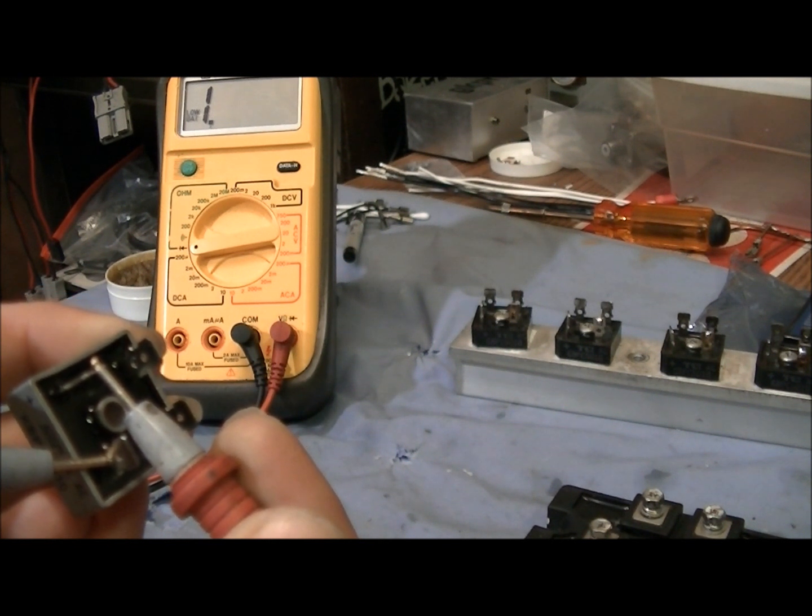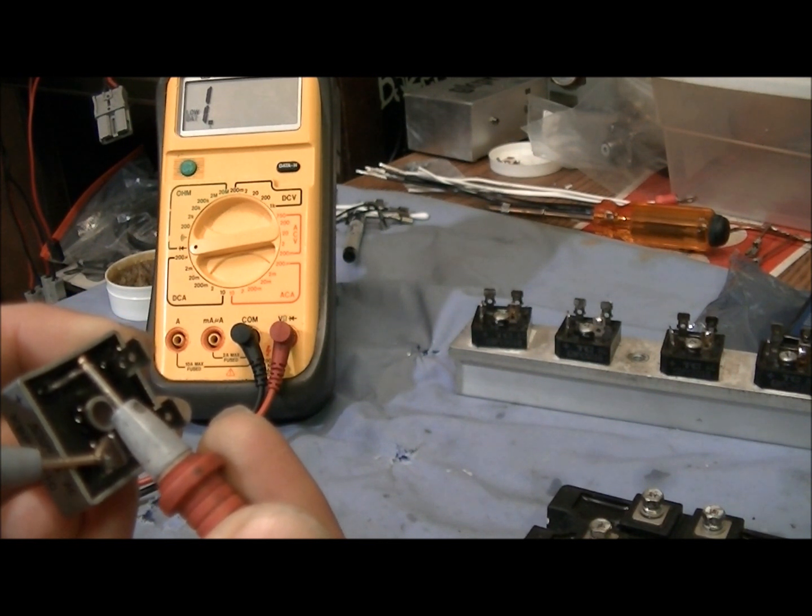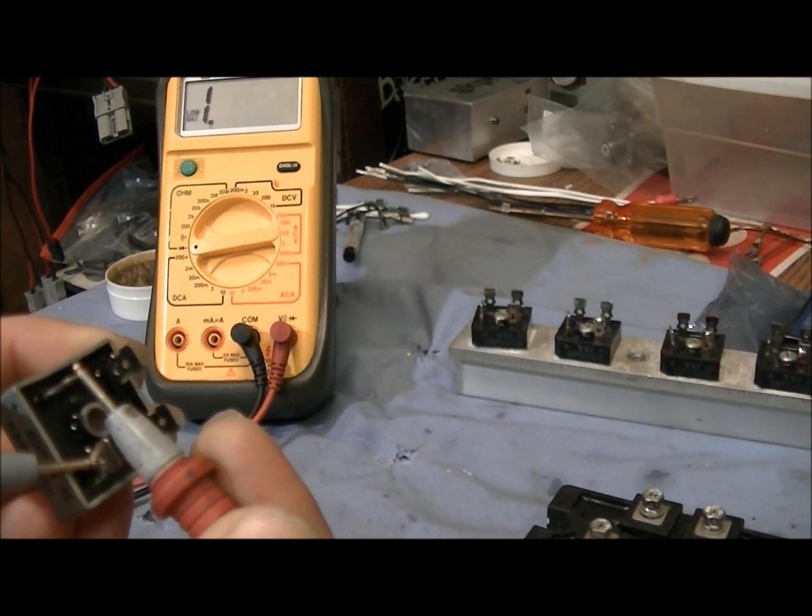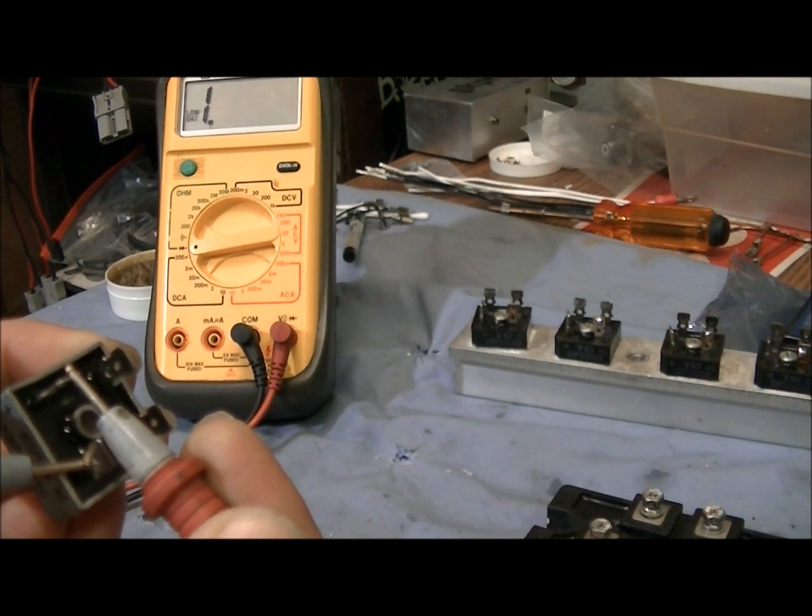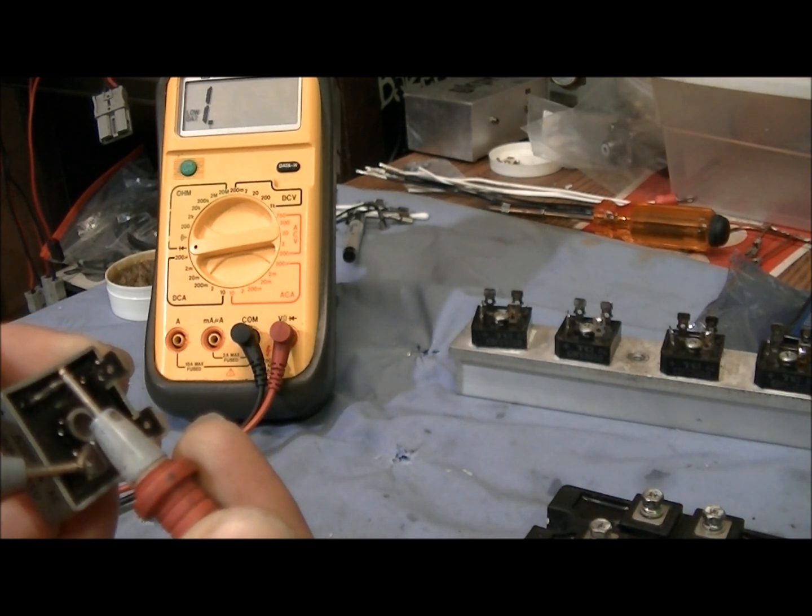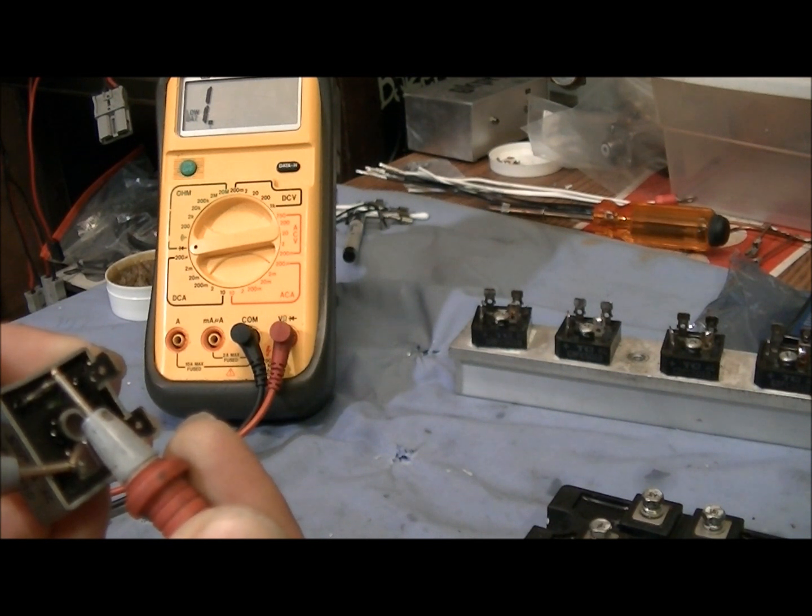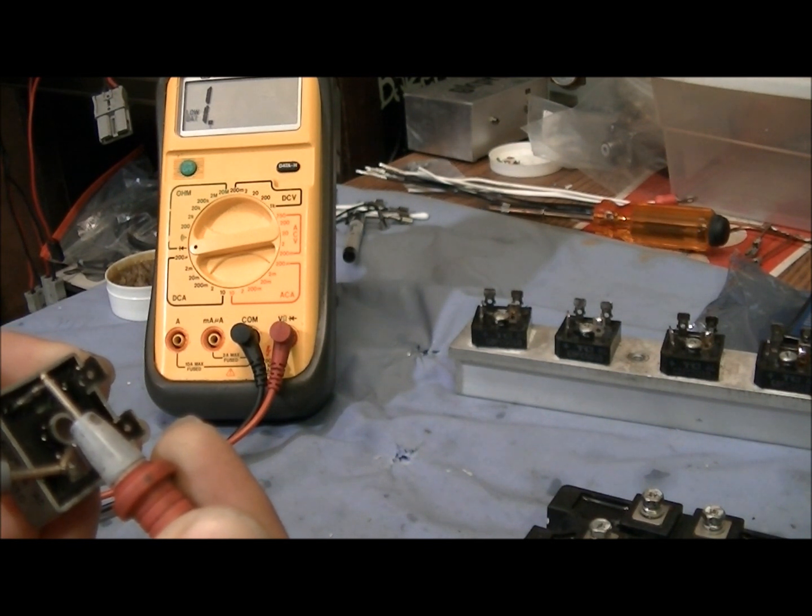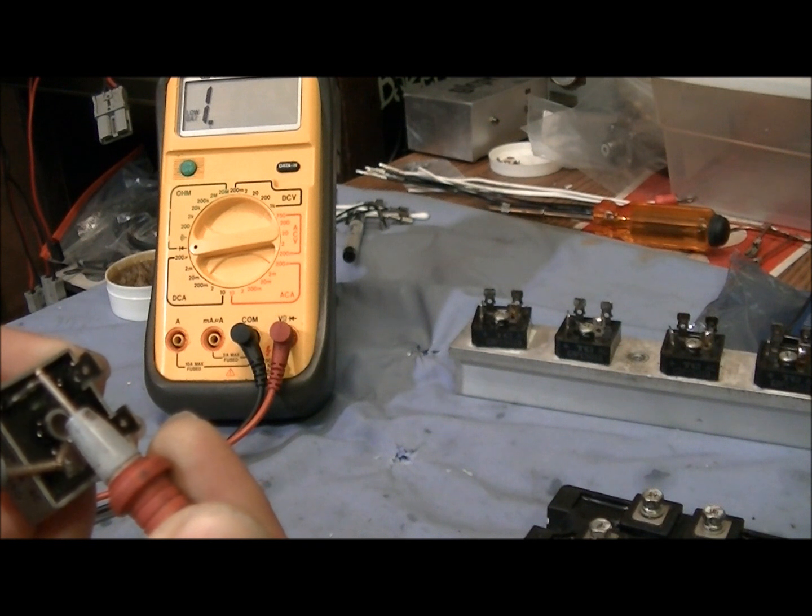If you get a reading both directions, you have a shorted diode. Because these bridge rectifiers, they can short in just one junction and not another. So you have to do both of these tests. A continuity test first and check both directions.